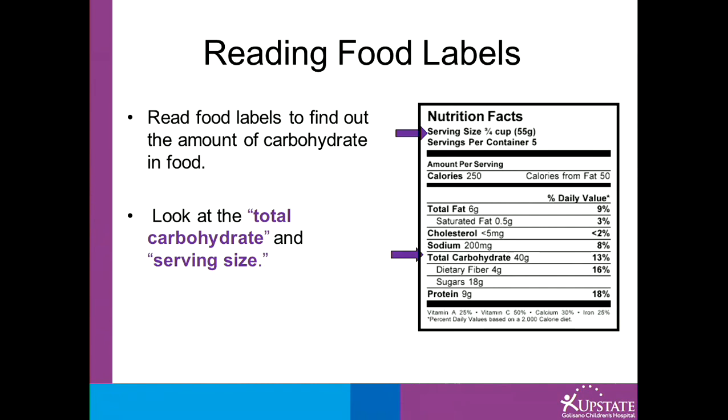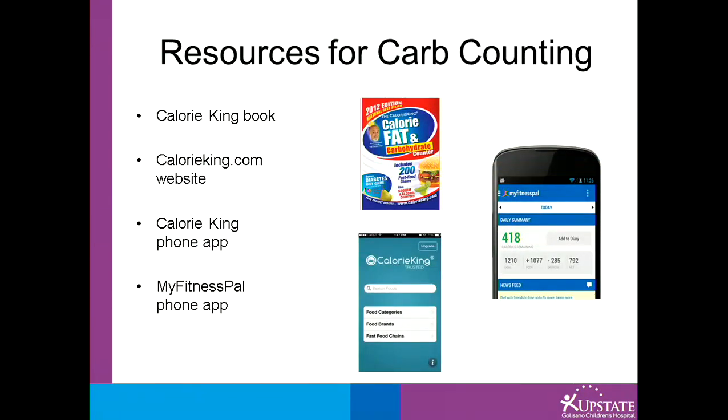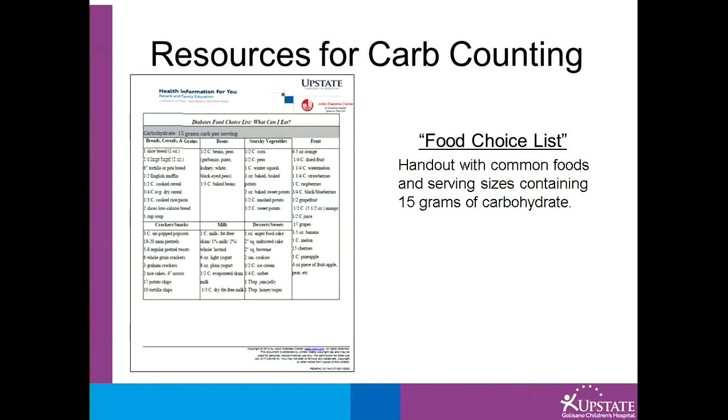Food labels are the first place you look to find out the amount of carbohydrate in a food. Look at the total carbohydrate and serving size. This food has 40 grams of carbohydrate per three-quarters cup. If you have one and a half cups, that would be two servings and equal 80 grams of carbohydrate. If an item does not have a food label, you can use resources such as the Calorie King book, Calorie King website or phone app, or MyFitnessPal phone app. These will tell you the amount of carbohydrates per serving size selected. The Upstate Joslin food choice list is another resource and lists serving sizes containing 15 grams of carbohydrate.